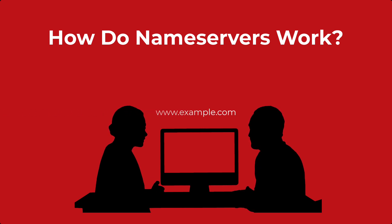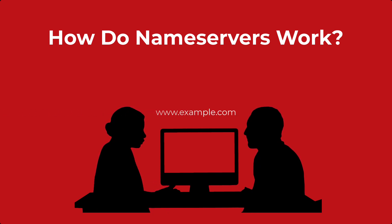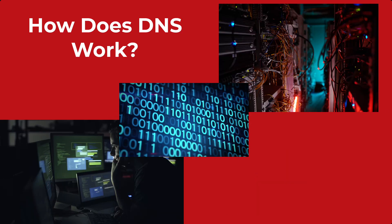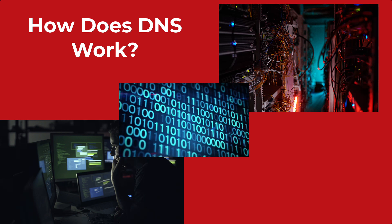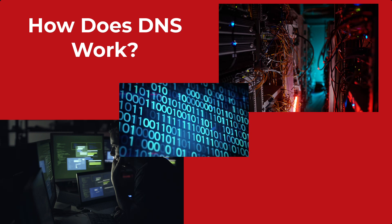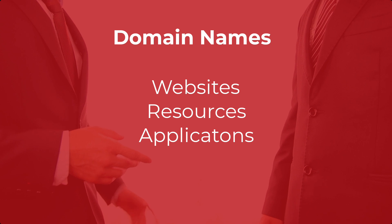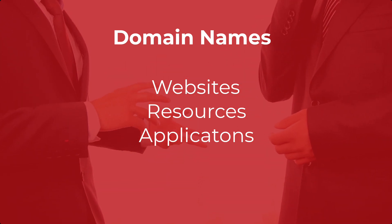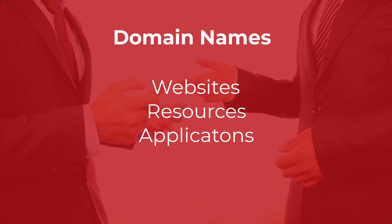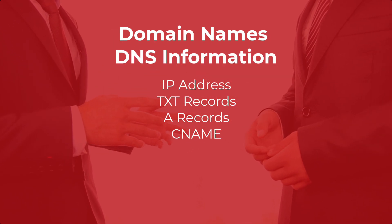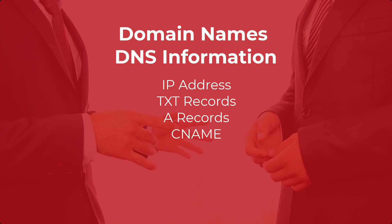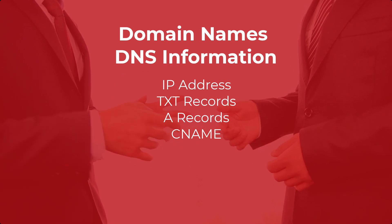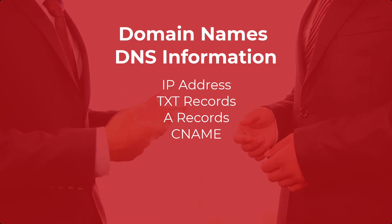How does it all work? Let's get back to those name servers. Each domain name is in the form of a word because humans understand and remember words. The computers, however, they all talk to each other in numbers. So a domain name is the part that we as human beings use to identify a website, a resource on the internet, or an application on the internet. Each domain name has a DNS entry that consists of an address and other instructions that allow computers to understand how to treat that domain name.